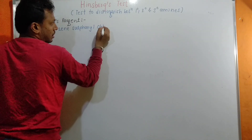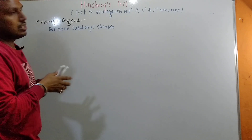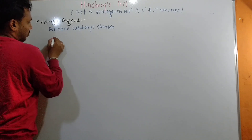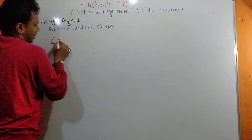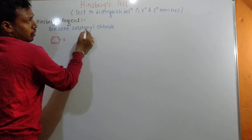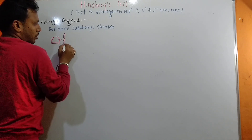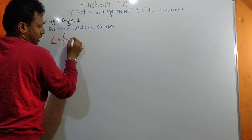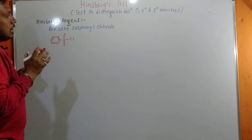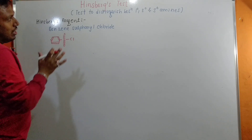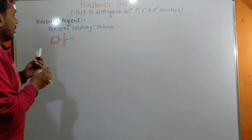Benzene sulfonyl chloride is called the Hinzberg reagent. Its structure: benzene is the six-membered ring containing alternate pi bonds. Sulfonyl means sulfur plus oxygen — the sulfonyl group is S double bond O, double bond O, and chloride is Cl. So with the help of this reagent we are going to distinguish between primary, secondary, and tertiary amines.